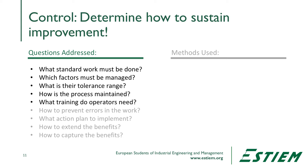What training do the operators need to be able to operate this process? How will we prevent errors from creeping into the work that those operators are doing? What action plan are we going to have to implement? How will we extend these benefits to other parts of the organization that could use the lessons learned? And how will we actually capture the benefits in the real world to make sure that those benefits are observable in our financial management systems?